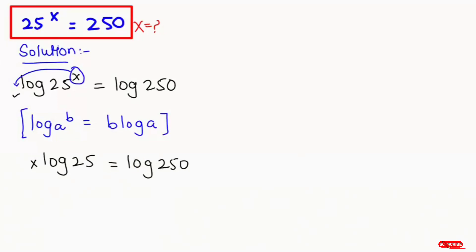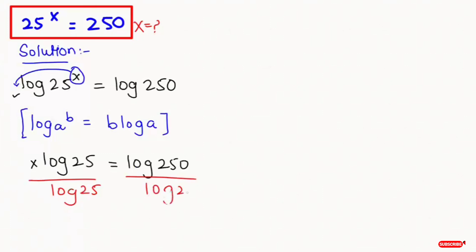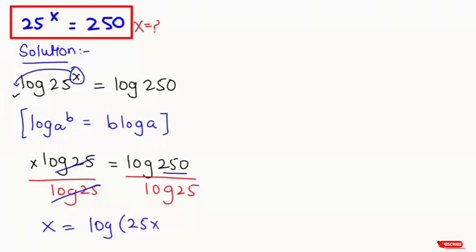Now here log of 25 is multiplying, so it will be divided on both sides. Log of 25 over log of 25 — this and this get cancelled. In the next step, x equals log of 250 over log of 25.